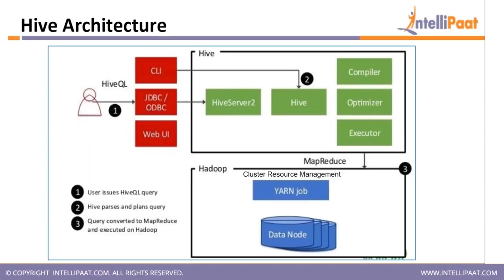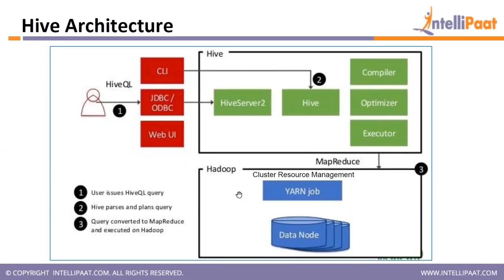When a user writes a query, it is accepted by a driver, which passes it to the compiler. The compiler checks with the Metastore to get the metadata and compiles the query. Then the optimizer optimizes it and gives it to the executor. The executor is your MapReduce engine, which runs the query in the cluster and returns the result.